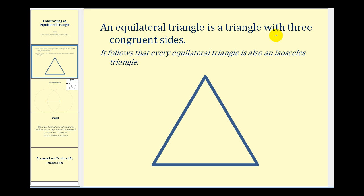An equilateral triangle is a triangle with three congruent sides. So we could mark each of these sides with one hash mark.